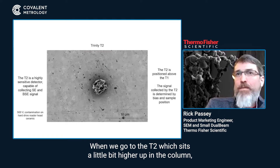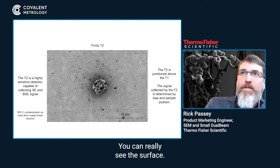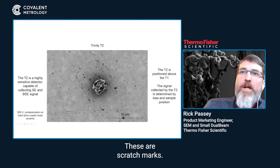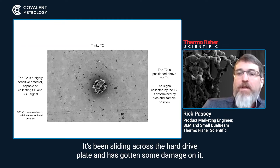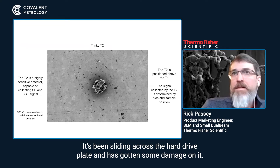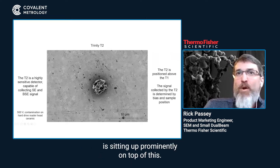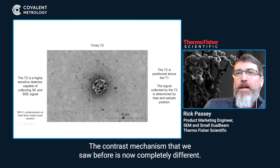When we go to the T2, which sits a little bit higher up in the column, you get a totally different view of the sample. You can really see the surface, and specifically, if you pay attention to the lines going across the sample, these are scratch marks — wear patterns from a hard drive head that's been used, sliding across the hard drive plate and sustaining damage. It's also picked up some contamination, and now you can really see this particle sitting up prominently on top. This stuff is a little lower profile, and the contrast mechanism is now completely different.